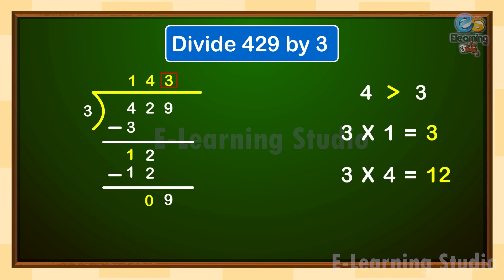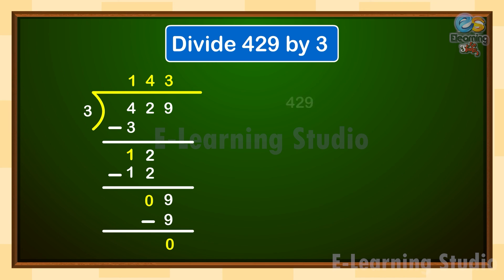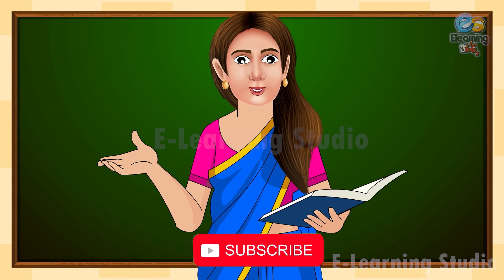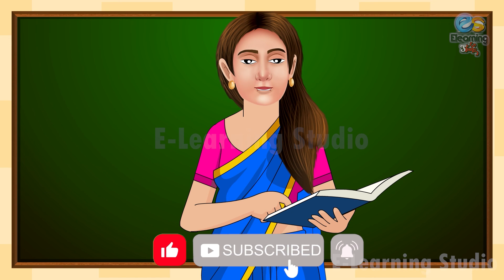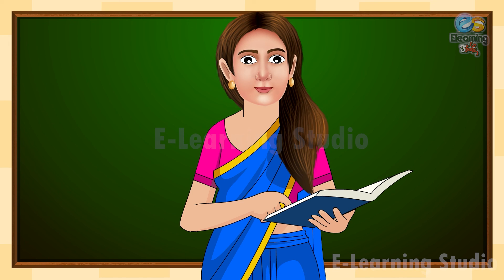3 goes into 9 three times. Write 3 as the next digit of the quotient on the top. Write the product — 3 and 3 are 9 — below 9, and subtract to get 0. So 429 divided by 3 equals 143. Hope this is clear to all. Thank you and happy learning!